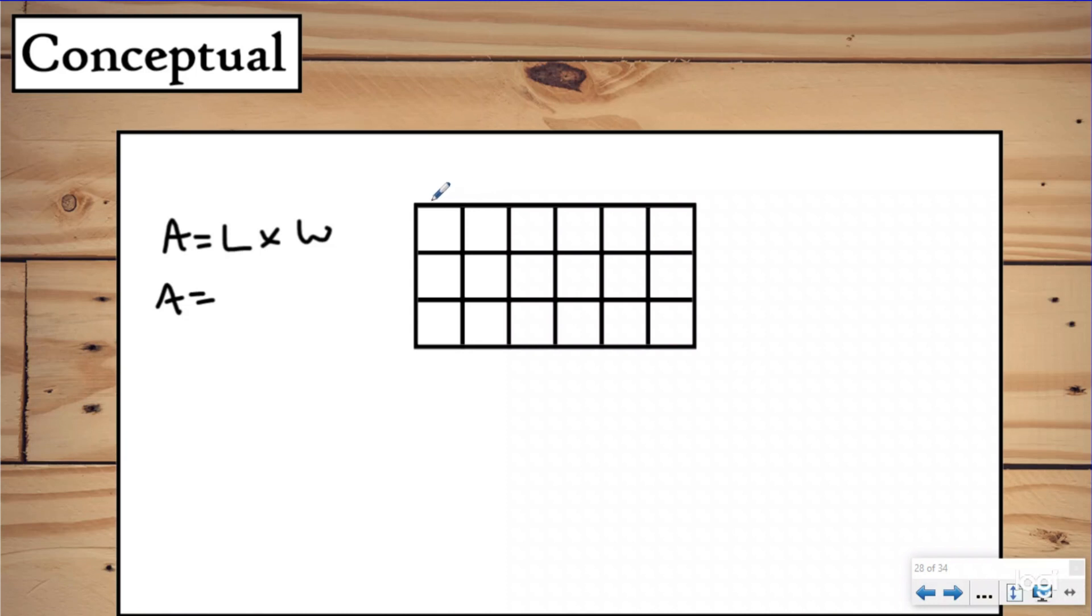So we'd label one dimension as one, two, three, four, five, six. So we could say our length is six units. And then we'd label our width, our second dimension as three units.